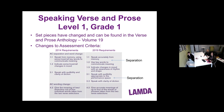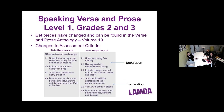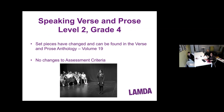For Grade 1, there's a separation of speaking accurately from memory and using key words to communicate meaning, giving learners a fairer opportunity to meet assessment criteria. Audibility and clarity of diction have also been separated. Grades 2 and 3 have similar changes — separation of memory and communicating meaning, and clarity of diction and audibility. Grade 4 has no changes, just a change of set pieces listed in the syllabus.